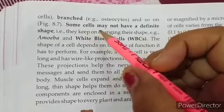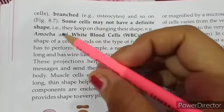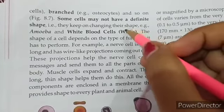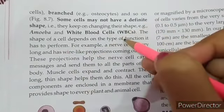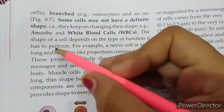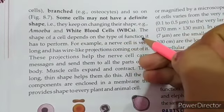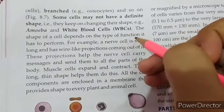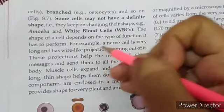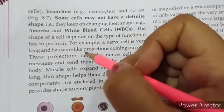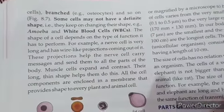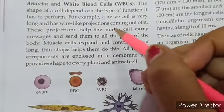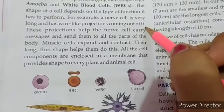Osteocytes and so on. Some cells may not have a definite shape — kuch cell ki shape definite nahi hoti. They keep on changing their shape, jaise amoeba aur white blood cell. The shape of a cell depends on the type of function it has to perform. Example: a nerve cell is very long and has wire-like projections.